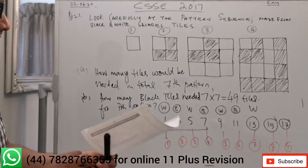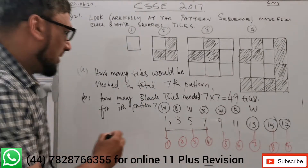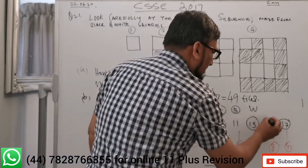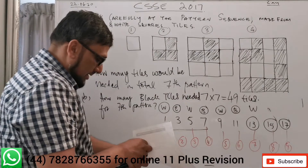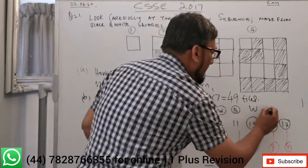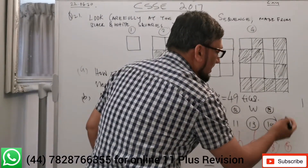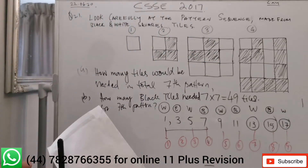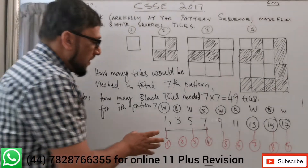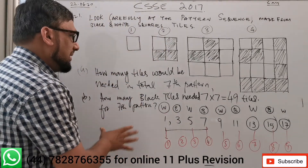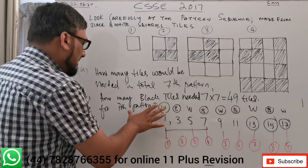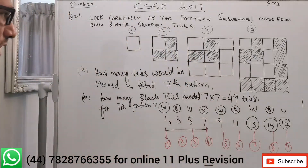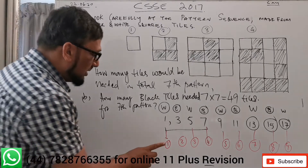Every time, after white they use black, alternating. So I need to find out how many black tiles are needed for pattern seven. Looking at patterns one to seven: the black tiles appear at patterns two, four, and six — using 3, 7, and 11 tiles respectively. The seventh pattern itself uses white tiles.